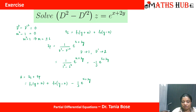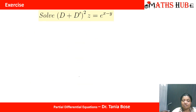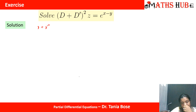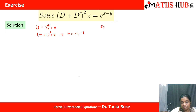Now let us move on to the next question: solve (D + D')² z = e^(x−y). Let us first solve for the complementary function. The auxiliary equation is (D + D')² = 0, giving (m + 1)² = 0. So m = −1, −1 — the roots are equal. The complementary function is f₁(y − x) + x · f₂(y − x).